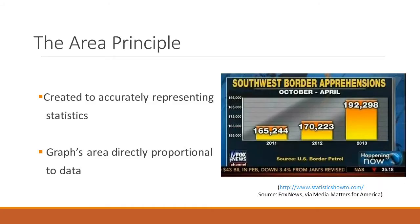The area principle was created as an attempt to prevent misleading representation of statistics. This fundamental rule states that the area occupied by a part of the graph should be directly proportional to the amount of data it represents.